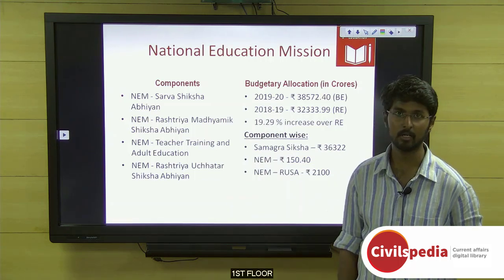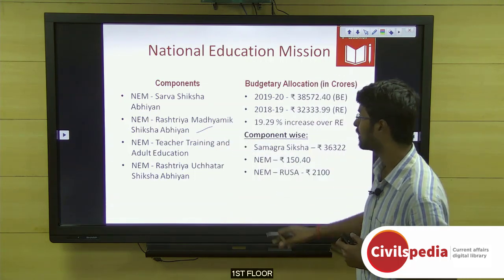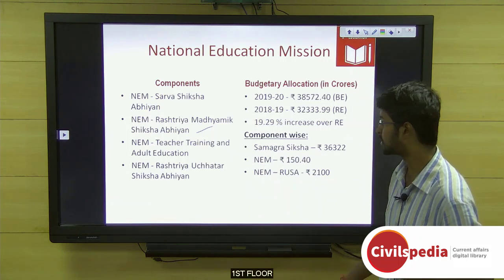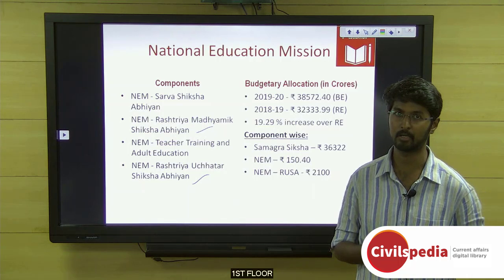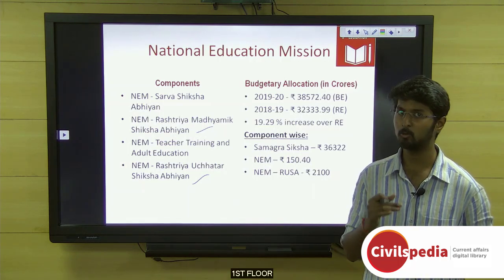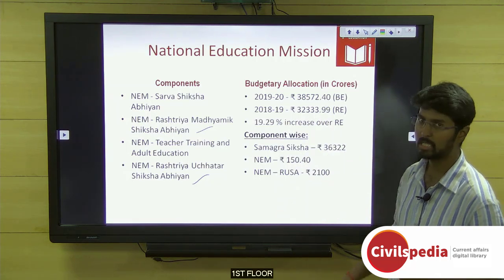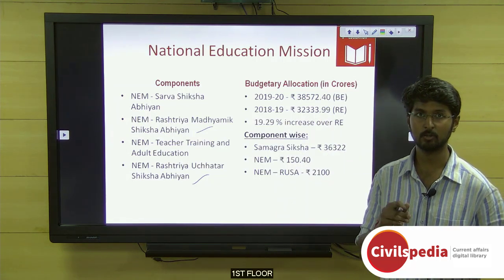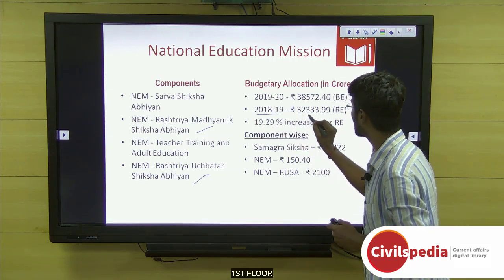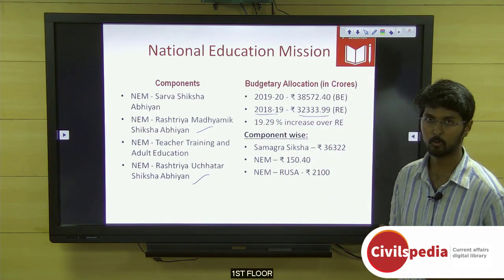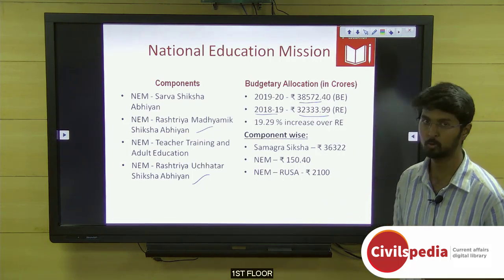The four components are Sarva Siksha Abhiyan, Rashtriya Madhyamik Siksha Abhiyan, teacher training and adult education, and Rashtriya Uchatar Siksha Abhiyan. This year it has been reduced to three components. You need to know the budgetary allocation to this National Education Mission.